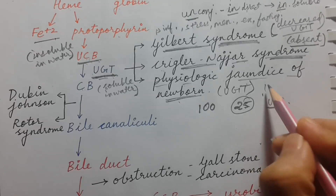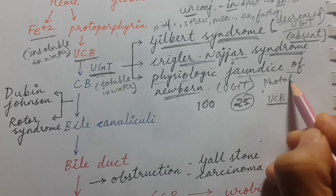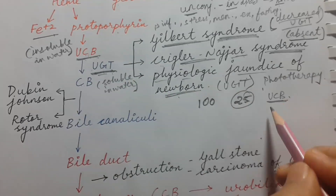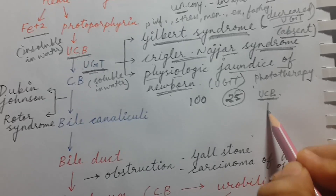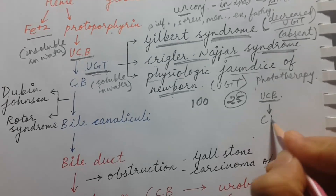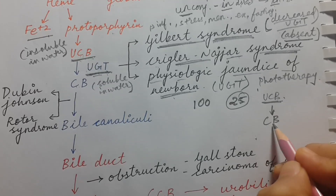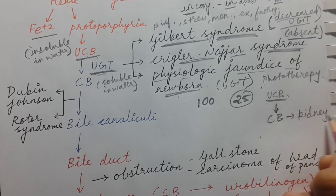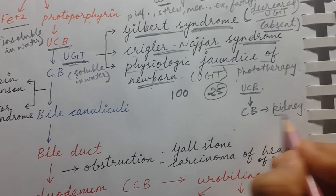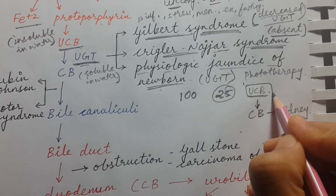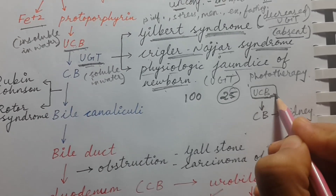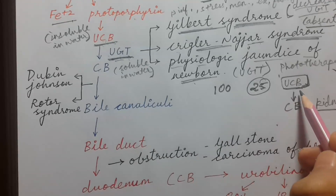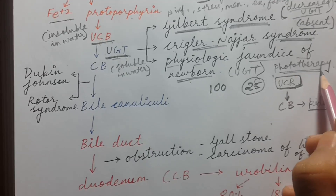The treatment is phototherapy, which acts like UGT — it converts unconjugated bilirubin into conjugated bilirubin. Since conjugated bilirubin is water soluble, it can be removed from the body through the kidney, preventing unconjugated bilirubin from depositing in places like the brain or basal ganglia.